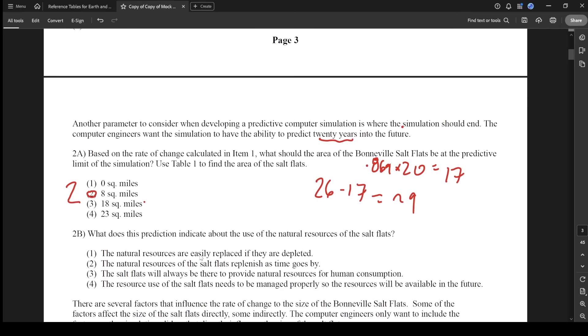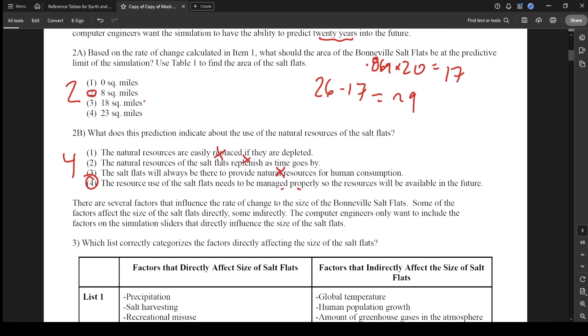What does this prediction indicate about the use of the natural resources? Well, everything's going to be worse. Natural resources are easily replaced? No. Natural resource will replenish as time goes by? No. The salt flats will always be there to provide natural resources? Clearly not. They're going away. The resource use of the salt flats needs to be managed properly so that the resources will be available. That's what I would say.